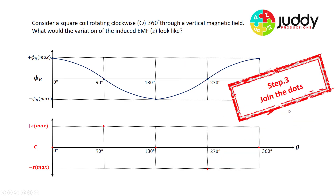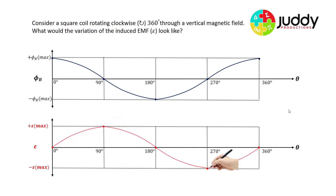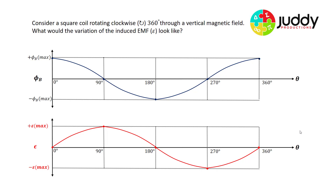The final step is to join the dots. As we draw that up, we've effectively changed from a cosine function to a sine function. That's what the variation of induced EMF looks like as the coil is rotated through 360 degrees of a vertical magnetic flux.